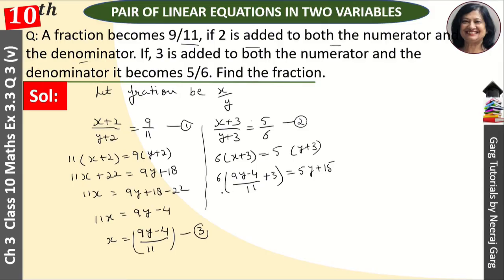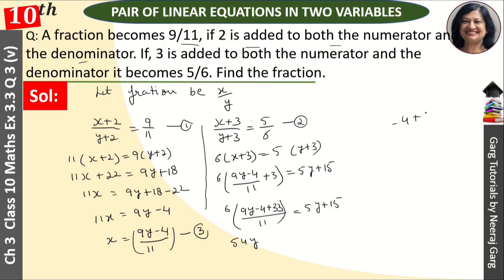Bracket open करने से पहले हम LCM ले लेते हैं. LCM = 11, तो यह आएगा: (9y − 4 + 33) upon 11 = 5y + 15. माइनस 4 और प्लस 33 — यह बचेगा 29.